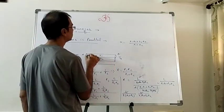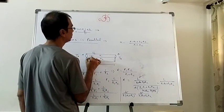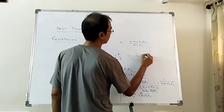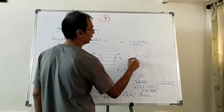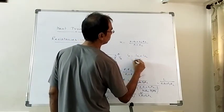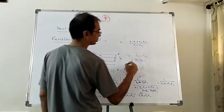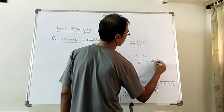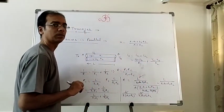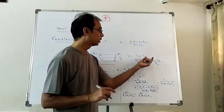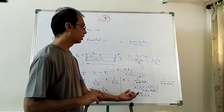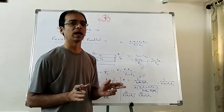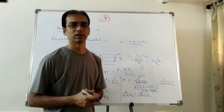In parallel connection, what is different is current. The net heat current is IH = IH1 + IH2. IH1 = (T_A − T_B)/R1 = (T_A − T_B)·K1·A1/L, and IH2 = (T_A − T_B)/R2 = (T_A − T_B)·K2·A2/L. This way we can calculate the effective thermal conductivity in parallel connection. These two types of connection — series and parallel — are all we have in thermal conductivity, and now we will solve problems based on that.